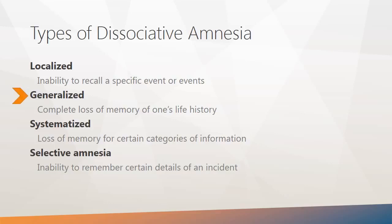Generalized amnesia is a complete loss of memory for one's life history. This type is rare and may be more common among combat victims, sexual assault victims, and individuals experiencing extreme stress or conflict. Systematized amnesia is the loss of memory for certain categories of information — for example, missing all memories about a specific family member. Selective amnesia happens when someone can only remember parts of events that took place in a certain period of time. For example, an abuse victim may only remember parts of what happened, or someone in a serious car accident may only recall certain portions of the accident.